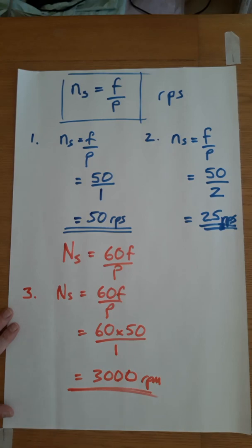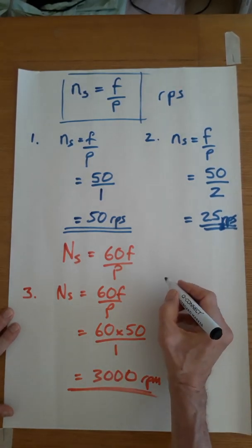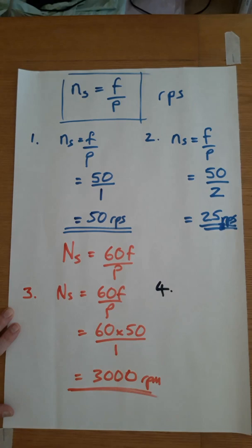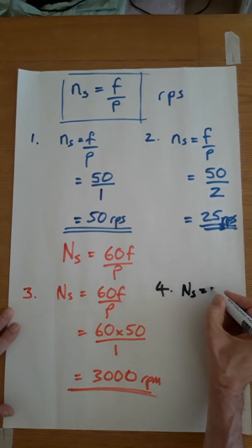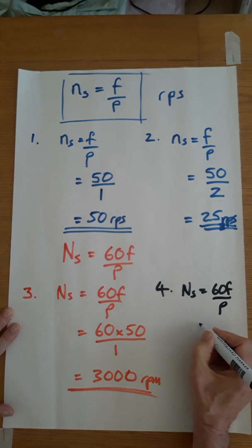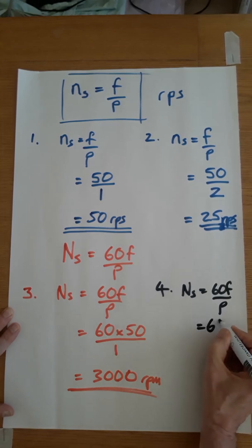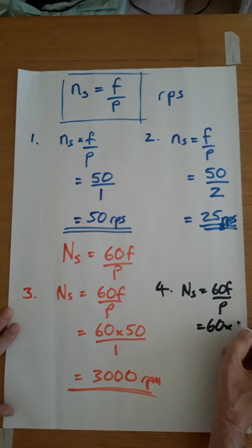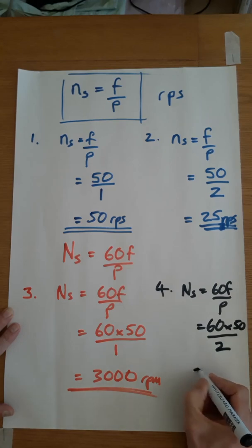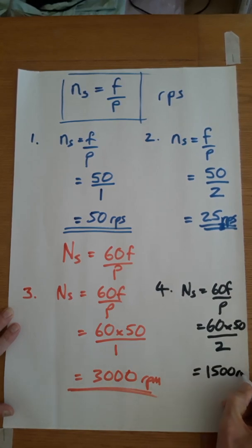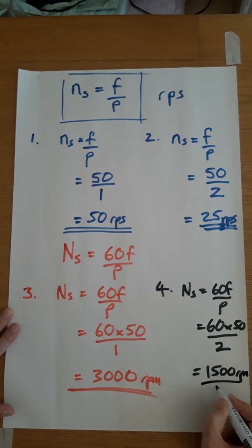Example four: a four pole machine on 50 hertz. Ns = 60f over p — 60 times 50 over two pairs — and that gives you 1500 rpm.